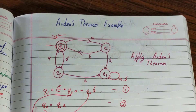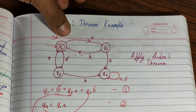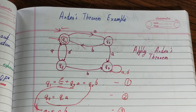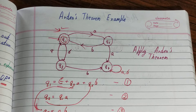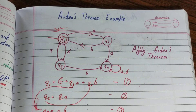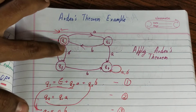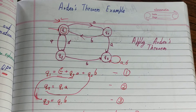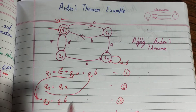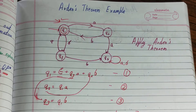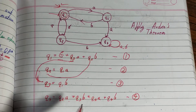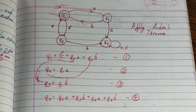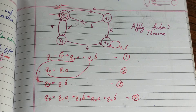For q2, there is only one incoming edge, which is q1a, so we write it as q2 = q1a. We do not add null here because q2 is not the initial state. For q3, there is only one incoming edge, q1b, so q3 = q1b. For q4, there are four incoming edges: q2a, q3b, q4a, and q4b, giving us q4 = q2a + q3b + q4a + q4b.